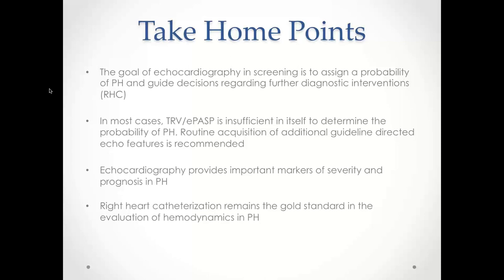Take-home points: the goal of echocardiography in screening is to assign a probability of pulmonary hypertension and guide decisions regarding further diagnostic interventions. TRV and estimated PASP are sufficient initial measures, but routine acquisition of other guideline-directed echo features is recommended. Echo provides important markers of severity and prognosis in PH. Finally, right heart catheterization remains the gold standard for evaluating hemodynamics, treatment response, and diagnosis of pulmonary hypertension.